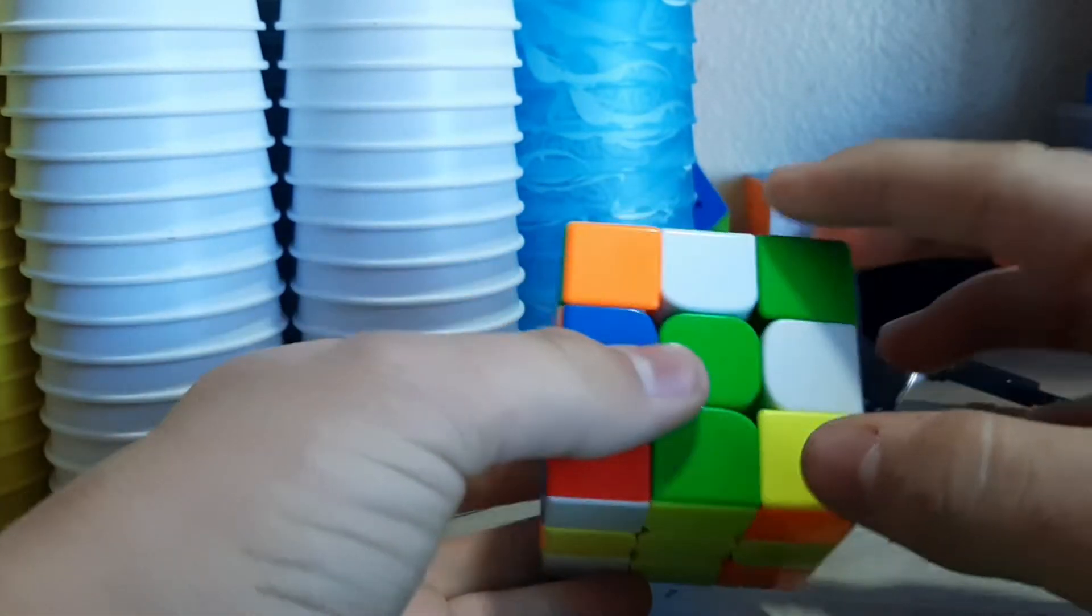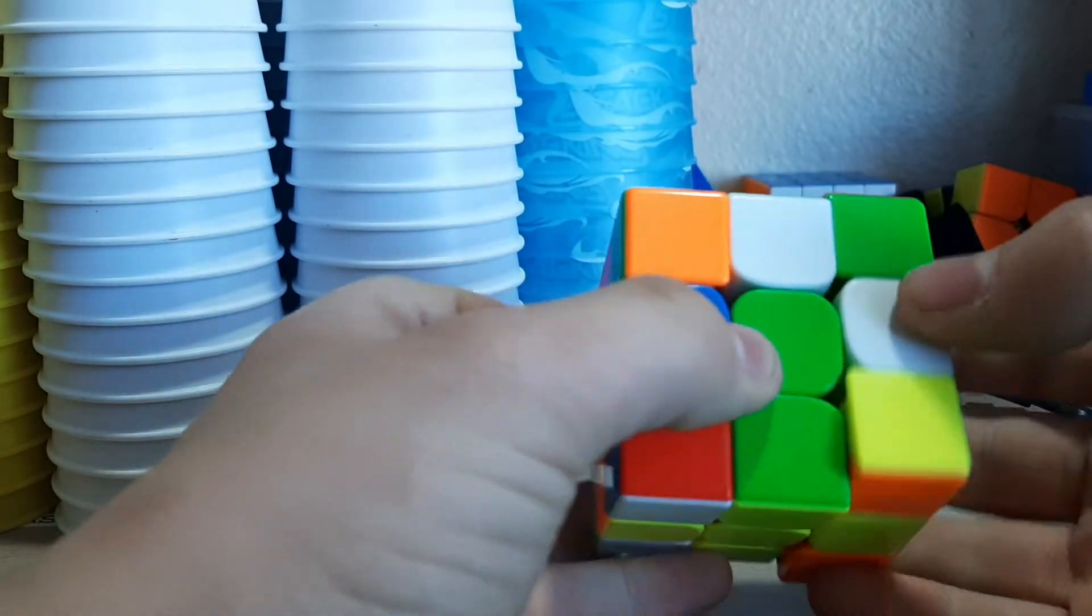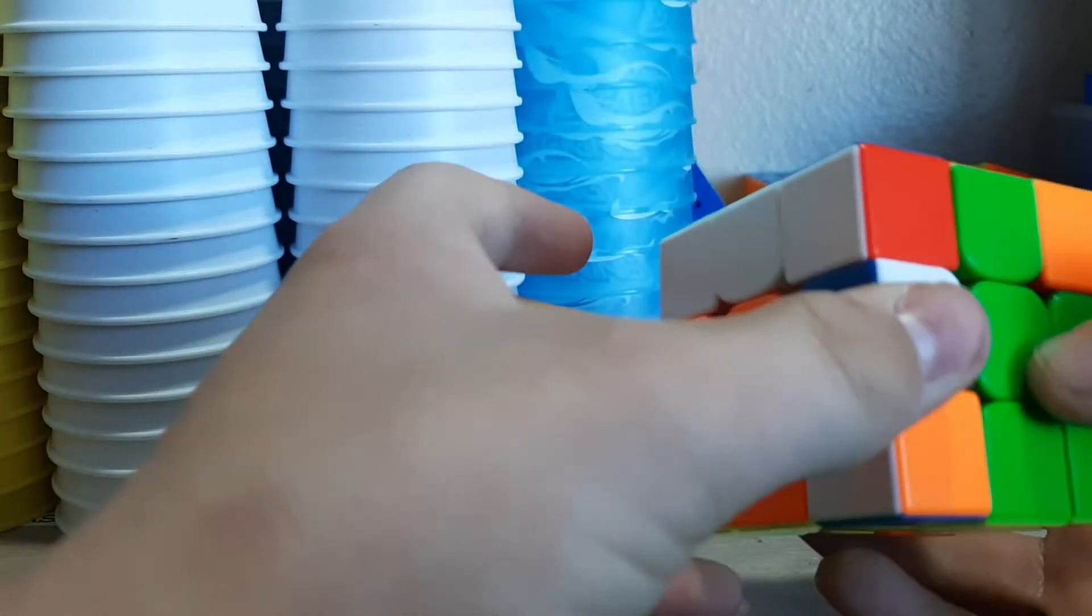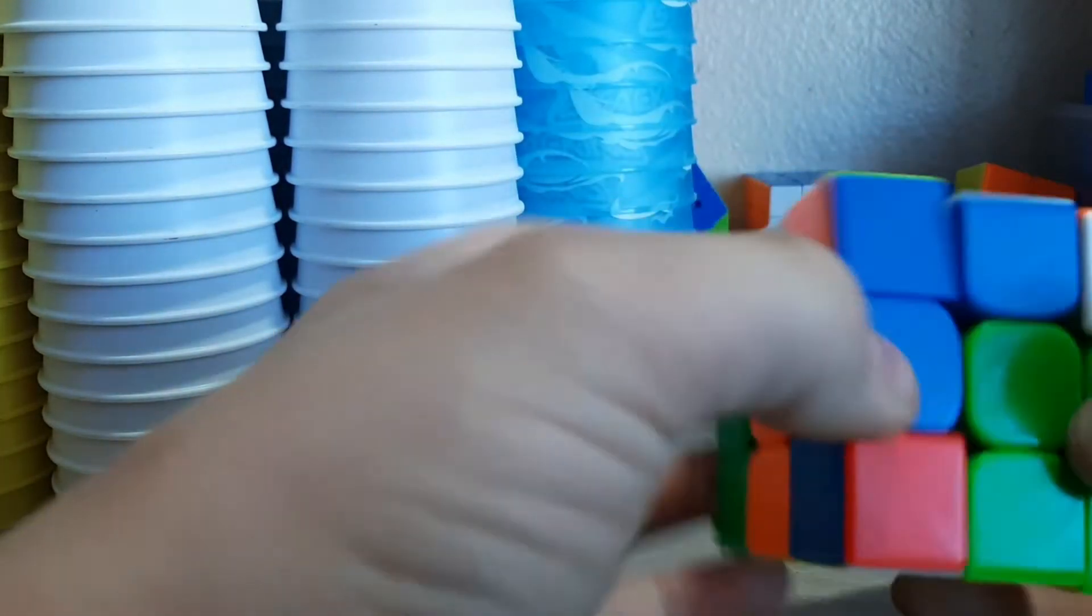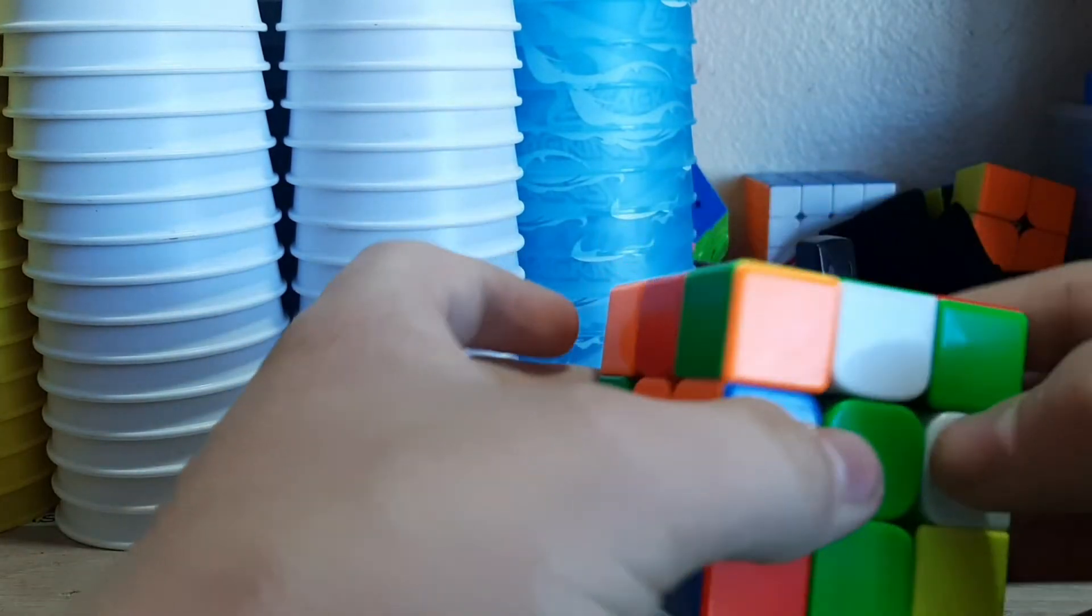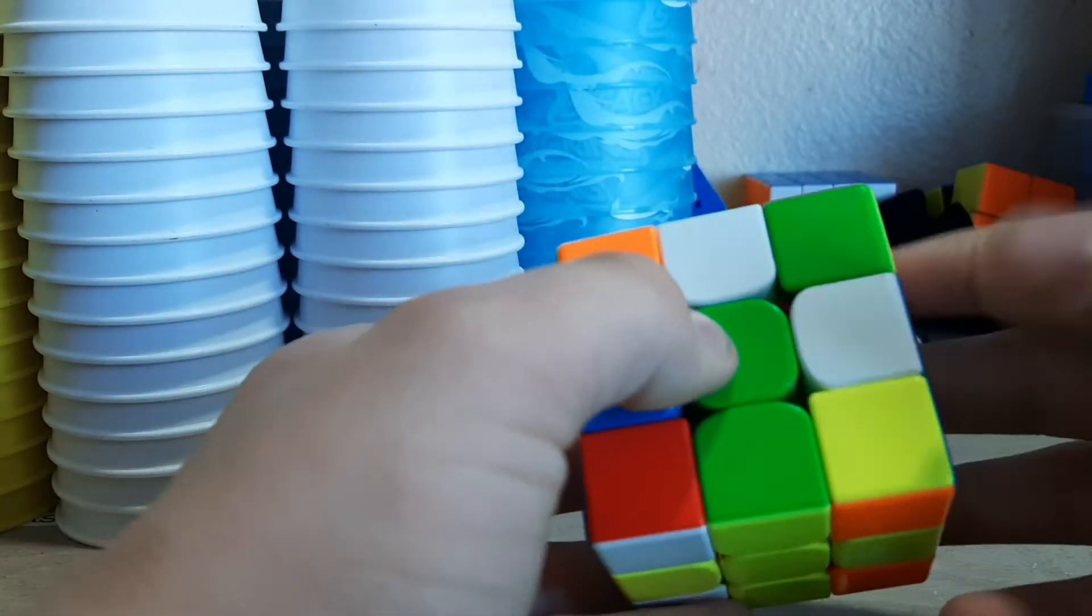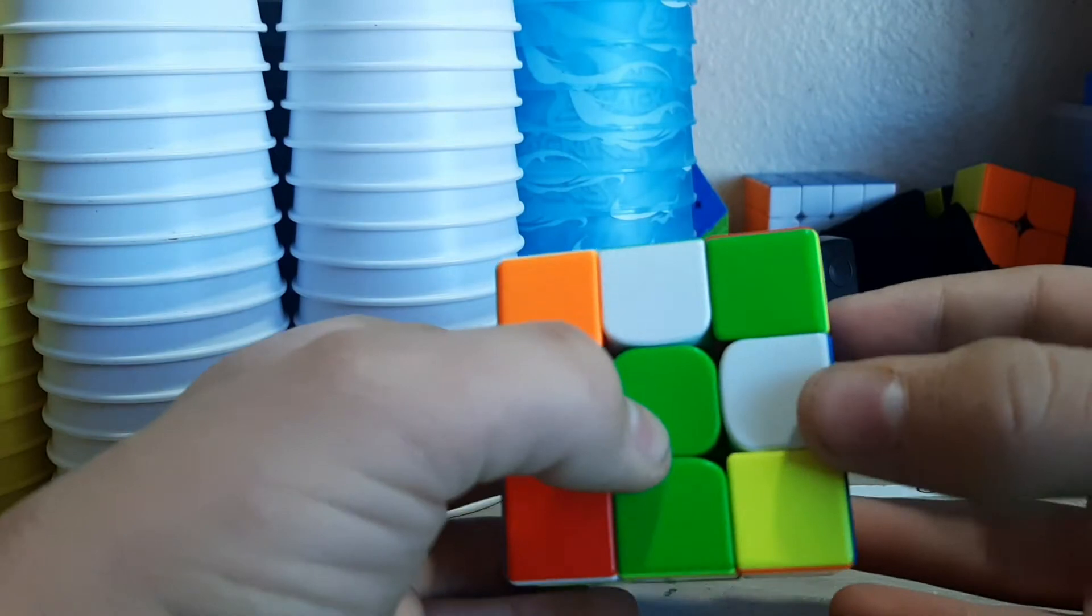Then I noticed this piece and this piece here, which would have gone here. I could have done that, but honestly if I would have done that it probably wouldn't have given me the last layer skip. Honestly, last layer is just stupid lucky. So I did this.